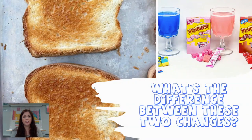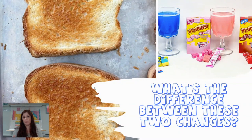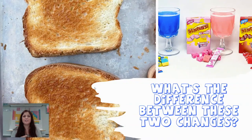If we take a look at these two scenarios — the image on the left shows bread that's toasting. I put bread in a toaster, it comes out, it's got a different texture, a different smell, a different color. Something clearly happened, it changed.